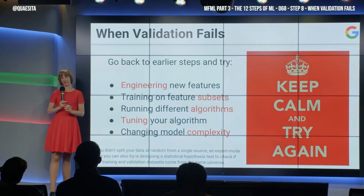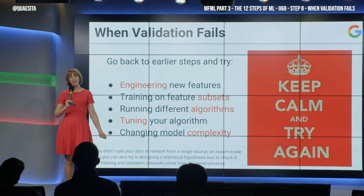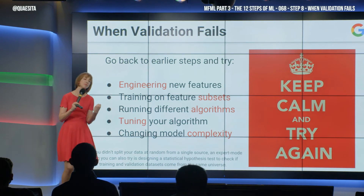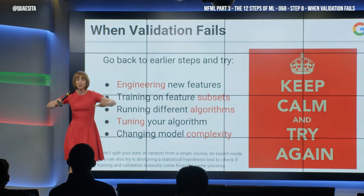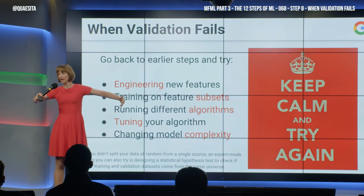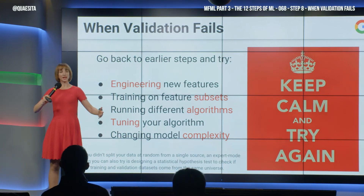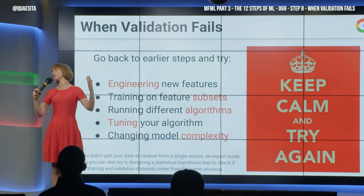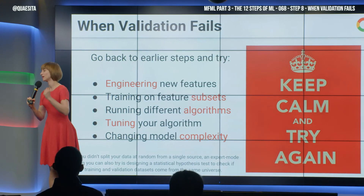Then, feature subsets. Maybe you got greedy. Maybe you said to yourself, all of these features are awesome and I can't bear to part with them. And like the hoarder that you are, you put them all through your model and it was too chubby. And now you pay for it by having overfitting. Fine — slim down your model a little bit. Try it with fewer things and see if that works better.